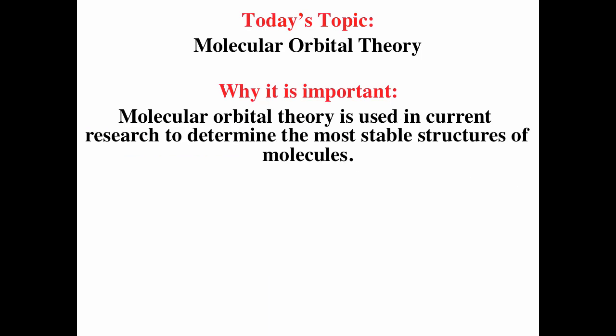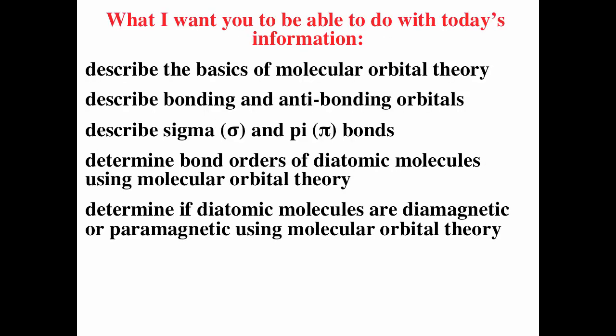This video is on molecular orbitals. Molecular orbital theory is important — it's used in current research to determine molecular structures and is very powerful. After watching this video, you should be able to describe the basics of molecular orbital theory, describe bonding and anti-bonding orbitals, describe sigma and pi bonds, determine bond orders of diatomic molecules using molecular orbital theory, and determine if diatomic molecules are diamagnetic or paramagnetic.